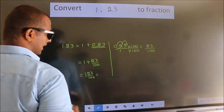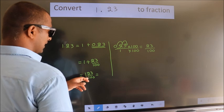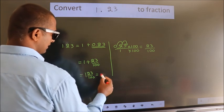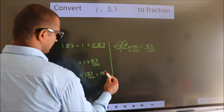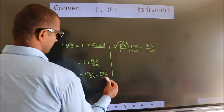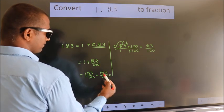And in improper fraction, it is 1 times 100 plus 23, which equals 123. So 123 by 100 is our fraction.